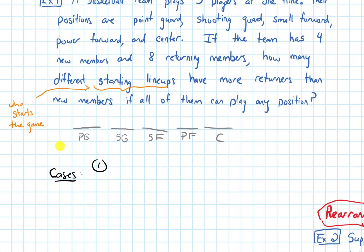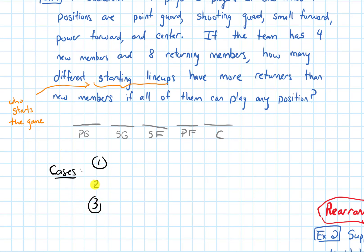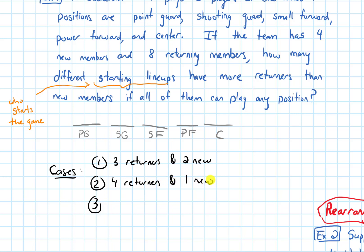We are actually going to have 3 cases here. The first case is the fewest number of returners we could have is 3 — so 3 returners and 2 new members. We could also have 4 returners and 1 new member. And we could also have 5 returners and 0 new members. Those are all the cases where we have more returners than new people. If we had fewer than 3 returners, we would have more new people than returners, and we don't want that.